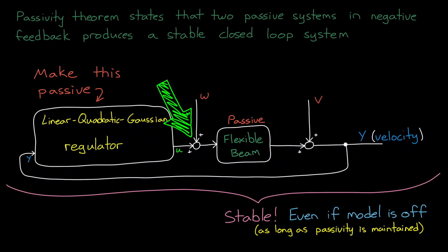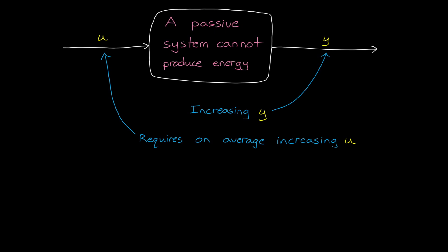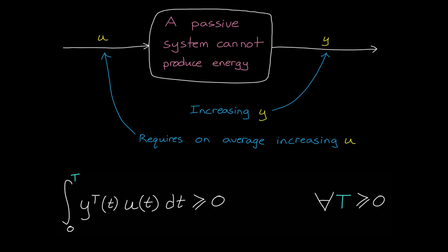In our example, the flexible beam with a force actuator co-located with a velocity sensor is a passive system. So if we design a passive controller, then we know running that controller on the real physical system will be stable, even if our model of the physical system is wildly off. Now in our case, because we have this positive feedback, this means that we want to design our controller such that the negative of the controller is passive. And that would then guarantee that the closed loop system is stable. So back to how we can tell if a system is passive. I mentioned that an input-output map is passive if, on average, increasing the output y requires increasing the input u.